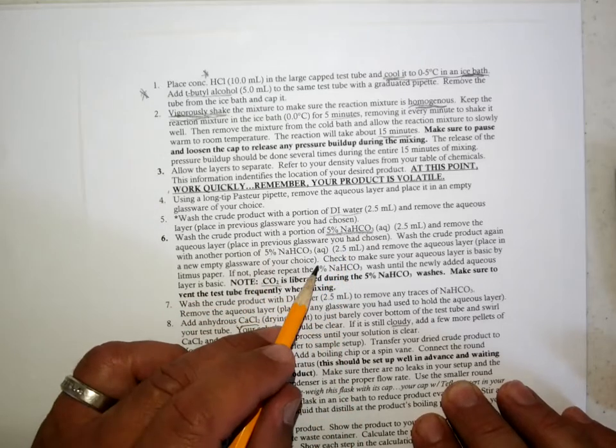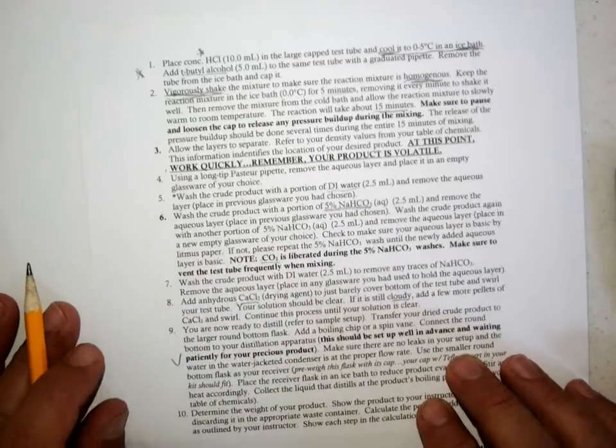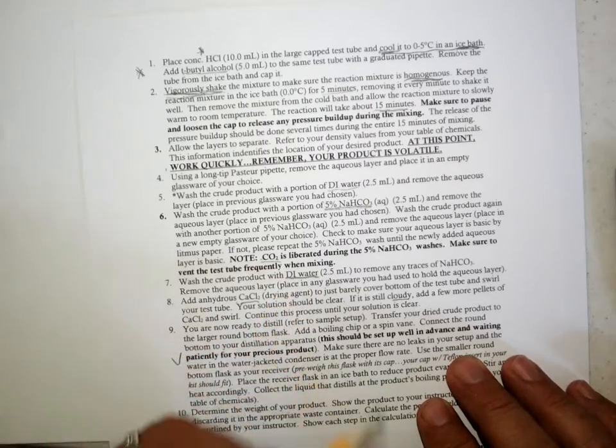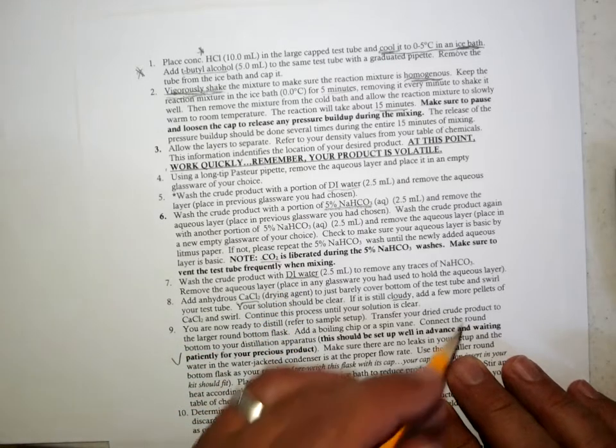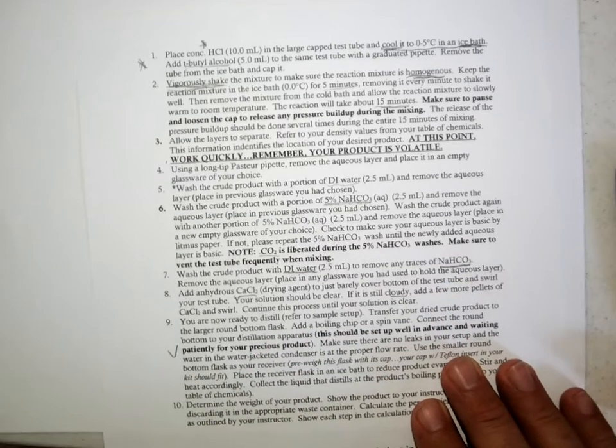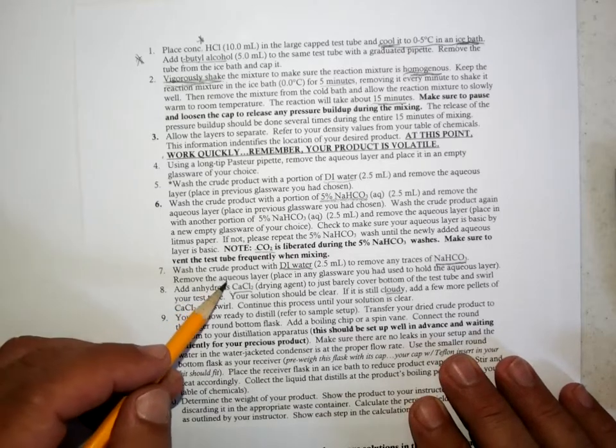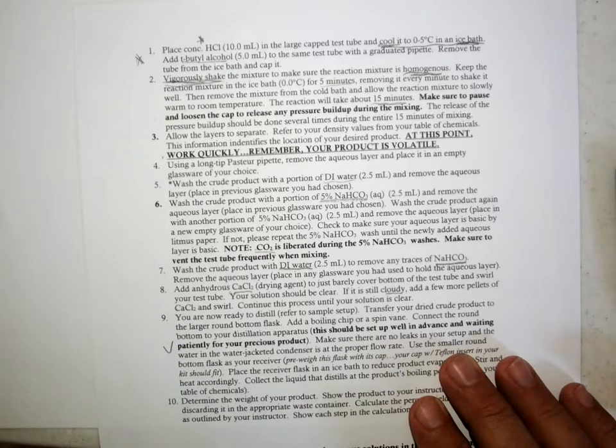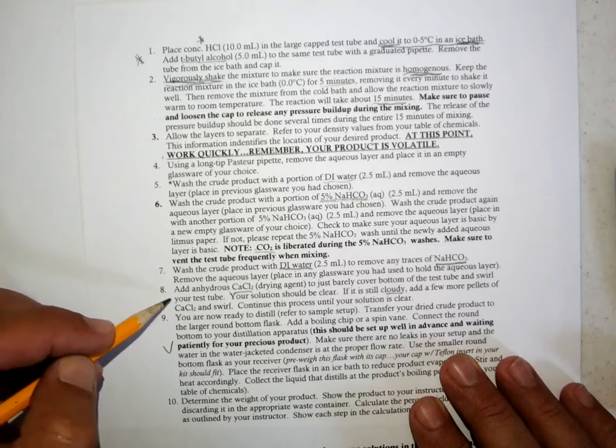Then after you've neutralized the acid, you will generally wash again with DI water to remove any traces of water-soluble impurities such as the excess sodium hydrogen carbonate that might be there. Then you remove the aqueous layer, and that'll be a discard because your product is the organic.